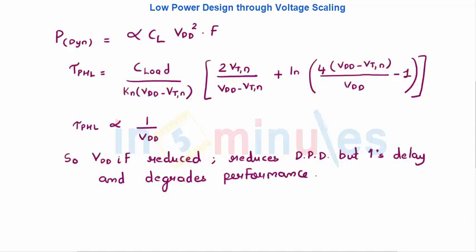Let's quickly recap what we have already seen. We know that dynamic power dissipation is a summation of switching power and short-circuit power. The switching power — also called dynamic power — is given by the equation alpha × CL × VDD² × frequency, where alpha is the switching activity factor and CL is the load capacitance. VDD needs to be scaled down because dynamic power dissipation is directly proportional to the square of VDD.